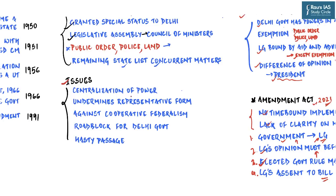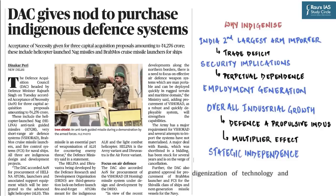The issues with the amended Act include: centralization of power in the central government, with real powers vested in the nominated LG rather than the representative government; the LG is under no obligation to implement any law passed by the assembly as he is not responsible to it; it goes against the principle of cooperative federalism; and the elected government will have to wait endlessly for the LG's opinion, creating high chances of the Delhi government becoming dysfunctional. The Act was also passed in haste without being referred to select committees and without proper debate.